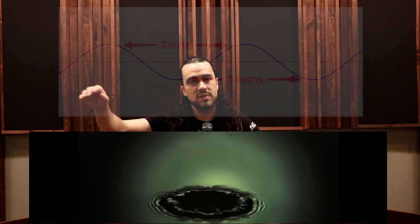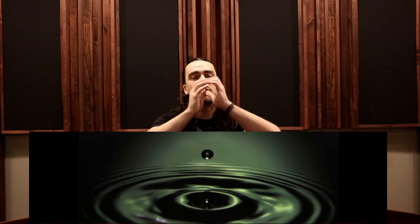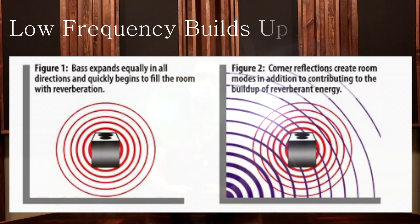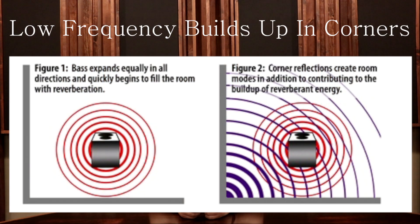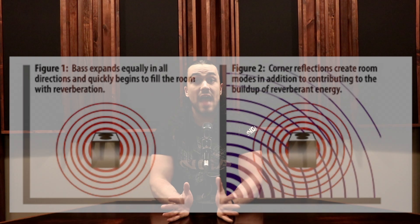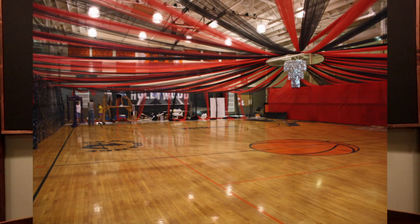Low end frequencies and low mid frequencies react more like water when they hit a surface. You have these large waves, and when they hit a wall, they splash out. That's why low end frequency tends to build up in the corners. Think about a gymnasium — if you walk in and go over to the corner, you always hear more bass up against the corner and the wall.